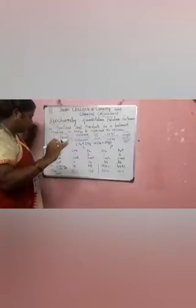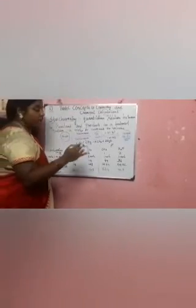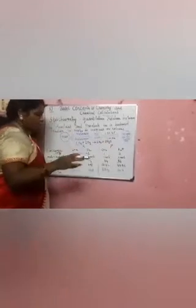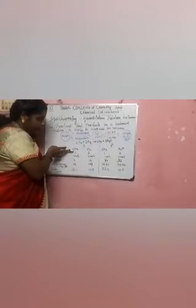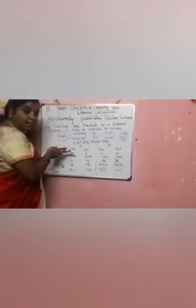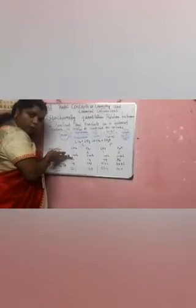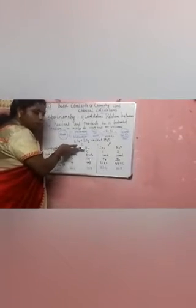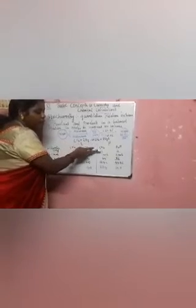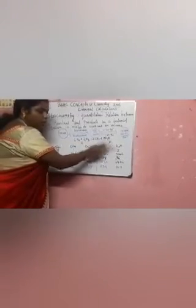Second, the mole concept. Mole concept means both the reactant and the product should be expressed in moles — whatever quantity we are getting, we express in moles. So for CH4: 1 mole; oxygen: 2 moles; carbon dioxide: 1 mole; water: 2 moles.